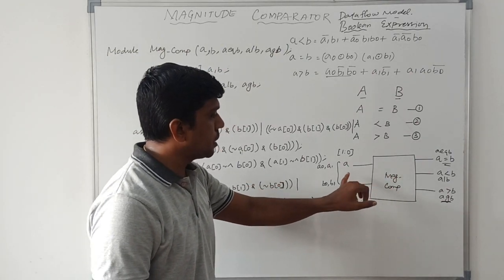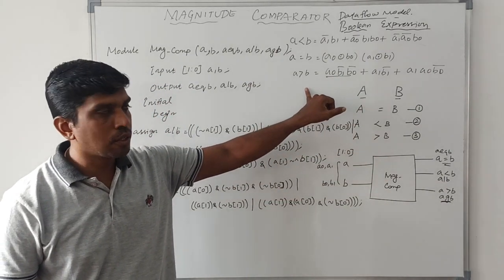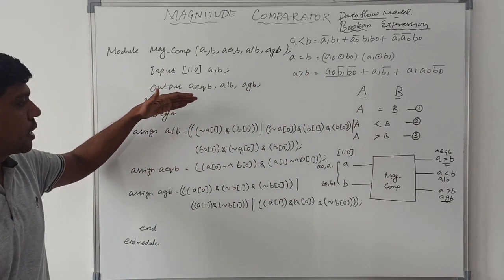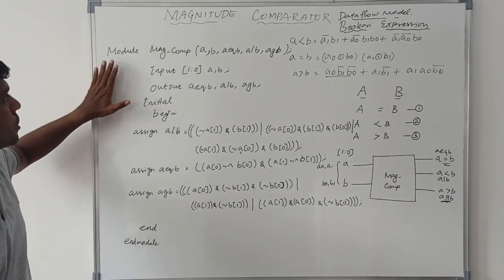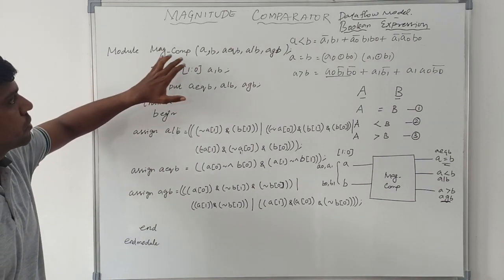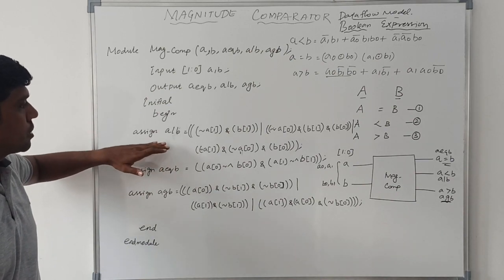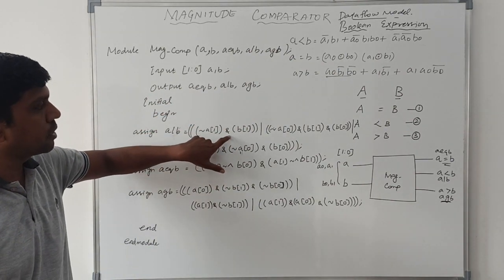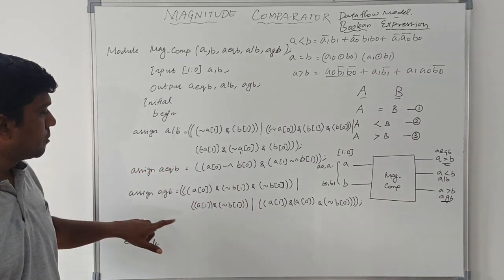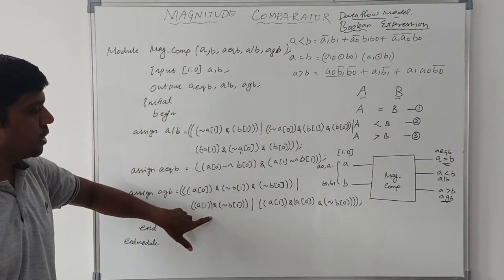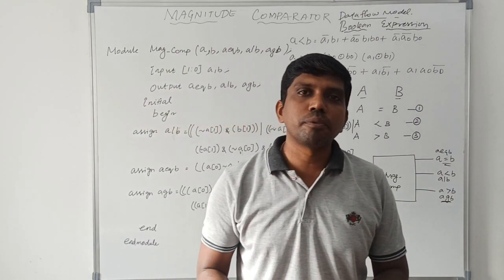To summarize: first draw the block diagram, then assign the input and output variables, then find the Boolean expressions using the truth table. Based on the Boolean expressions, write the magnitude comparator data flow model program. First initialize the module and module name, then declare input and output variables, then form the equations: assign A less than B, assign A equal to B, and assign A greater than B with their corresponding Boolean expressions, then end the module. I hope you understand the concept well.